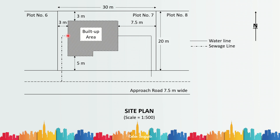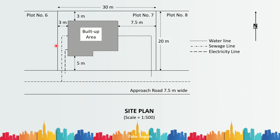Next is the sewage line. The sewage line starts from where most of the sanitary units of the building are located. Using a dot-and-dash line, it is connected to the center line of the approach road. The water line passes at one level of the road and the sewage line passes at a different level, so make sure these two are not ending on the same part of the road. It is better to show them at two different places, as shown here.